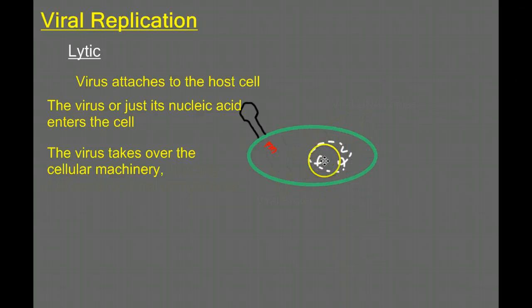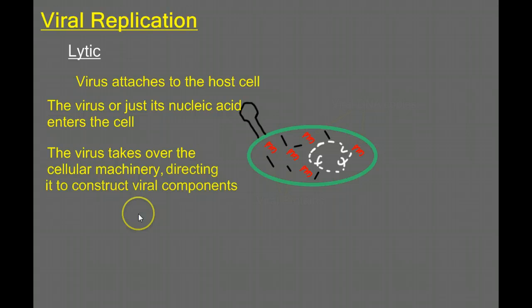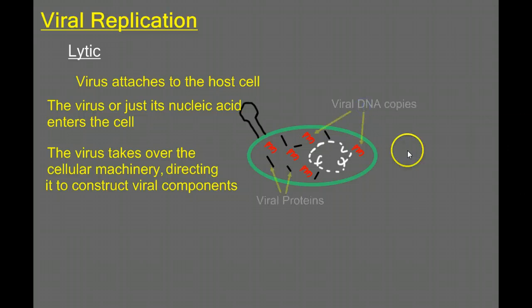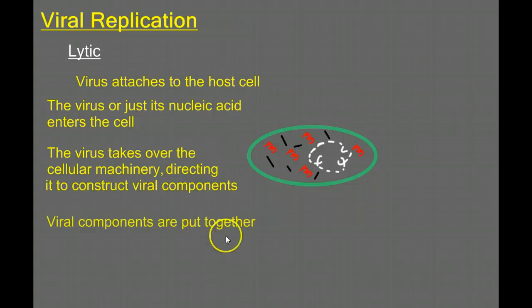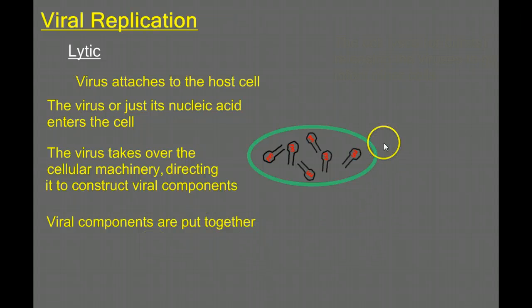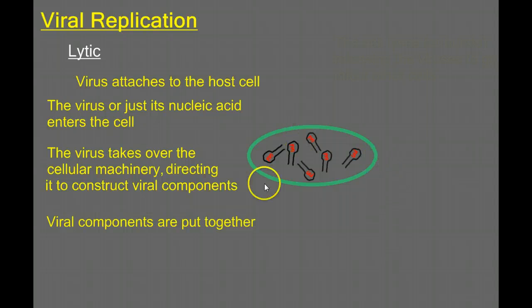It's almost as if it's going to take this cell factory hostage and tell the cell: instead of following your genetic instructions, you're going to follow these genetic instructions. So it's going to direct the cell to construct viral components. We see viral DNA copies and viral proteins being produced. Once the cell has been directed to compose these viral components, the viral components are then assembled into the actual virus.